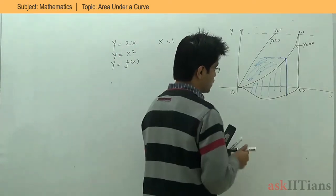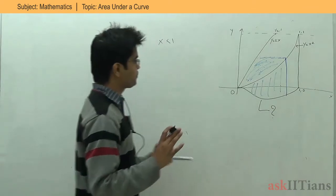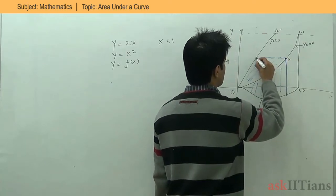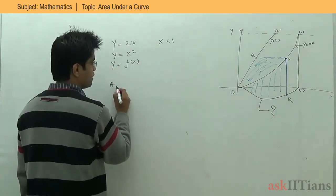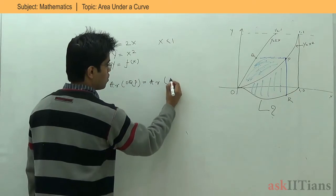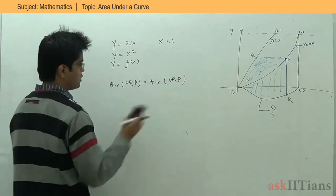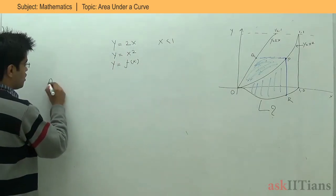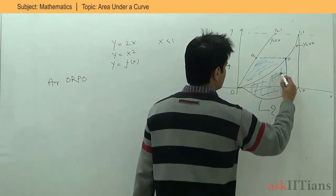We have to find the equation of this function. Let's say this point be any point P, this point be Q, and this point be R. The question says that the area OQP equals to area ORP. This is what we are given and we have to find out Y equals to F(X). So let's try to find out what the equation of this function is, and first we will find out the area of ORPO — that means this part.